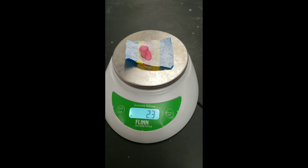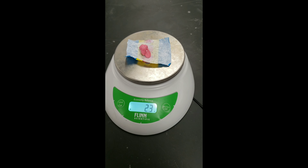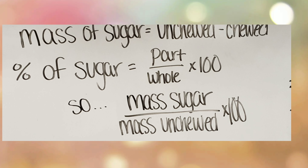The chewed piece of bubblegum is 2.3 grams — that's the after. To calculate the mass of the sugar, take the mass of the unchewed piece and subtract the mass of the chewed piece. That difference shows the amount of sugar in one piece of gum. From there, take that sugar mass — your part — divide it by the mass of the unchewed bubblegum — your whole — and that gives you the percent composition of sugar within the bubblegum.